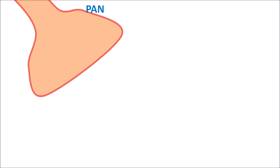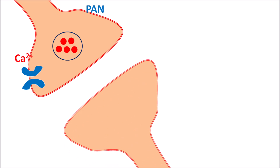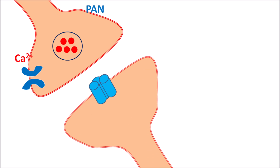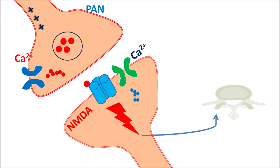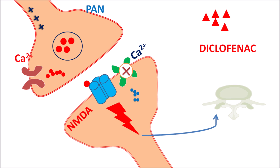Some primary afferent neurons express excitatory neurotransmitters such as glutamate, released by calcium-mediated exocytosis. On postsynaptic neurons, NMDA receptors — important modulators of the nociceptive pathway — are coupled with calcium channels. When primary afferent neurons are stimulated, calcium enters, triggering glutamate release. Glutamate acts on NMDA receptors, opening calcium channels and causing depolarization of postsynaptic neurons, transmitting the nociceptive signal to the spinal cord. Diclofenac modulates NMDA activity centrally, closing calcium channels and inhibiting depolarization.